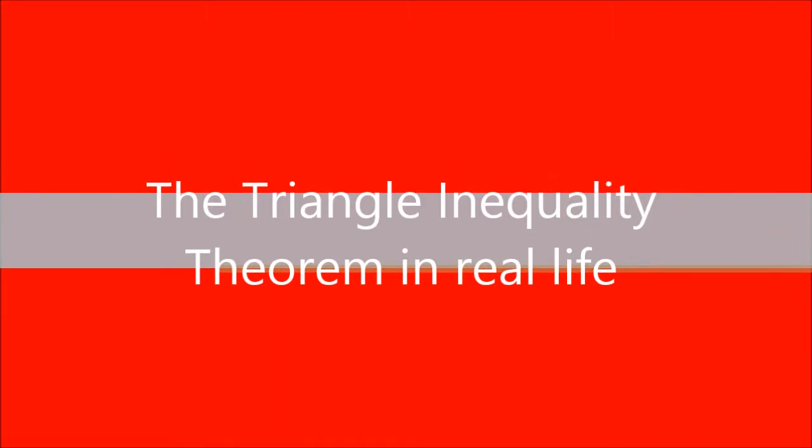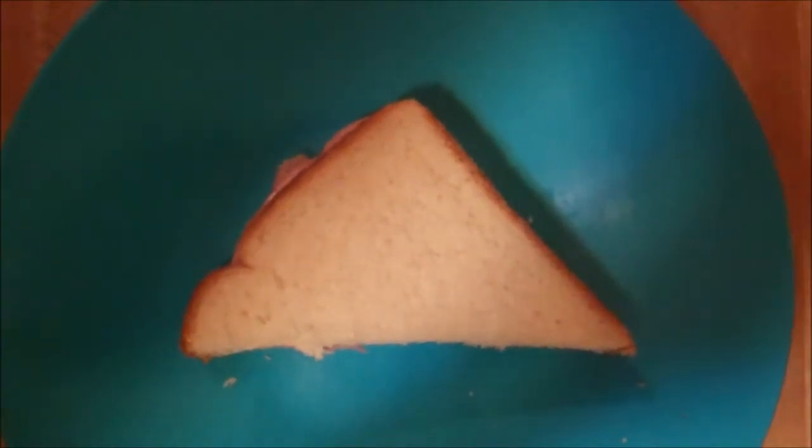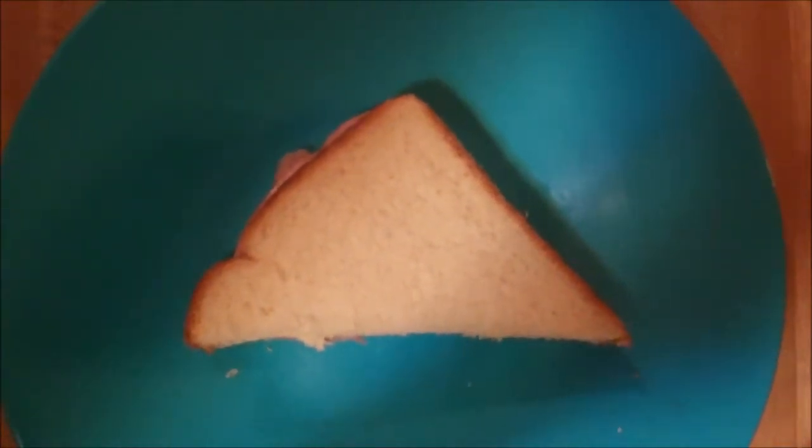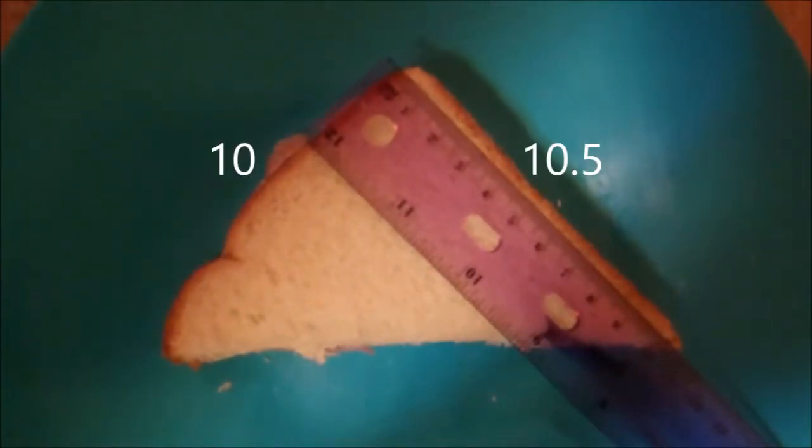The triangle inequality theorem in real life. This sandwich is a triangle, but we can prove it's a triangle by adding two sides and proving it's greater than the third side. If you measure this side, it measures up to be 10 centimeters long. This side measures up to be 10 and a half centimeters long.